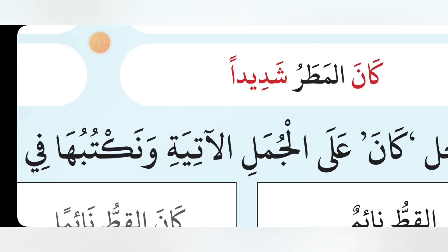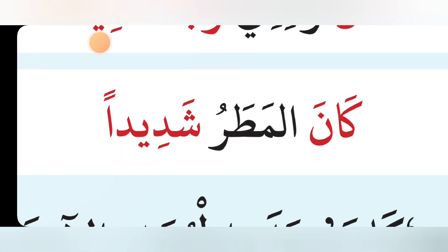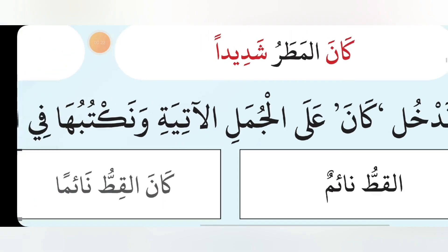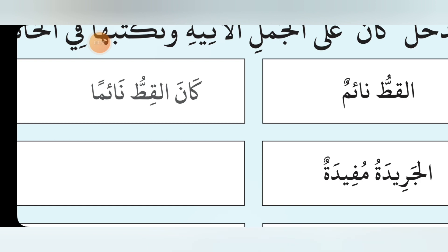Isma Kana is the subject and Khabaru Kana is the predicate. For example, Al-Mottar is Isma Kana — it has been given the nominative case, that means Rafa. And Shadidan is Khabaru Kana — it has been given the accusative case, which means Nasb. So let's enter Kana into these sentences.